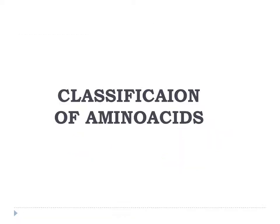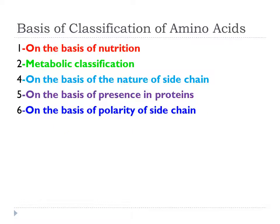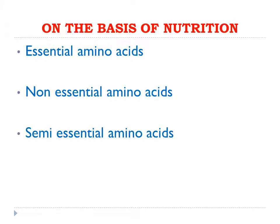Now we move on to the classification of amino acids. Amino acids can be classified in various ways: on the basis of nutrition, on the basis of their metabolism, on the basis of the nature and polarity of their side chains, and on the basis of their presence or absence in proteins. We will start with the classification on the basis of nutrition.